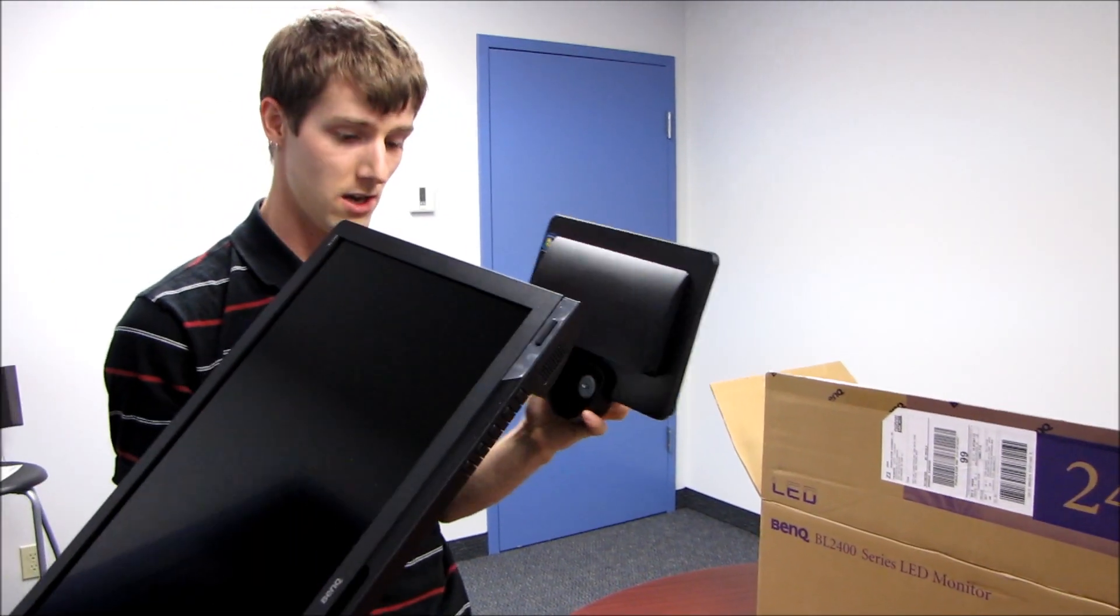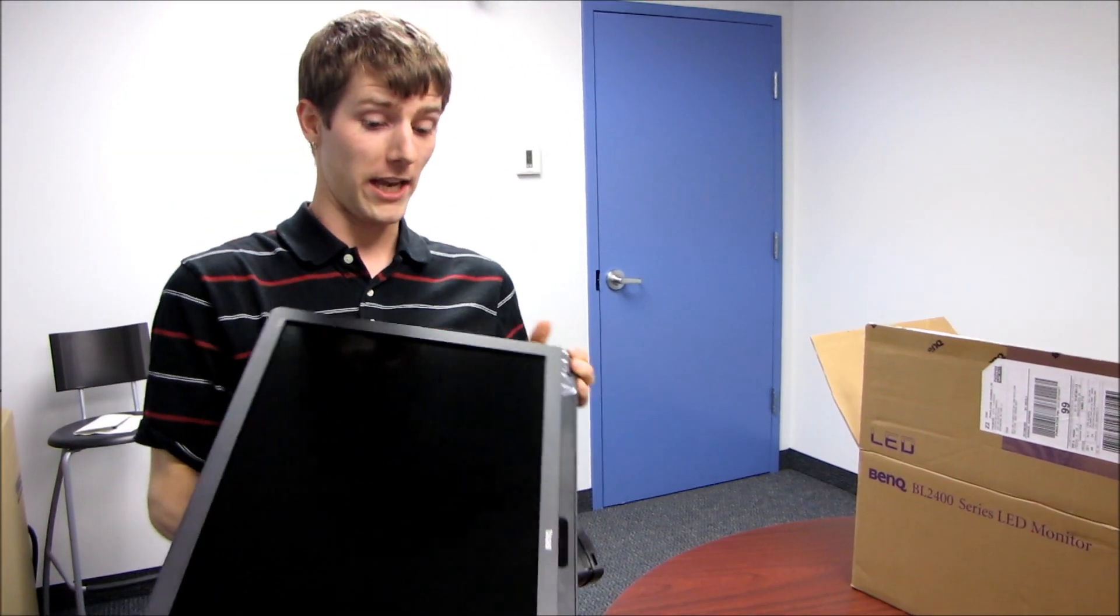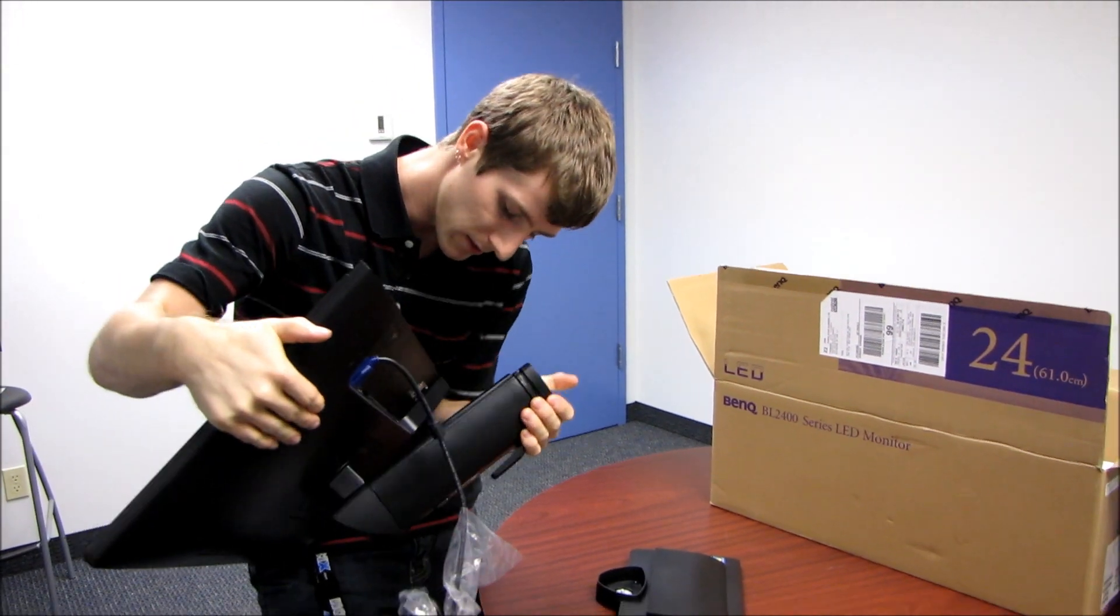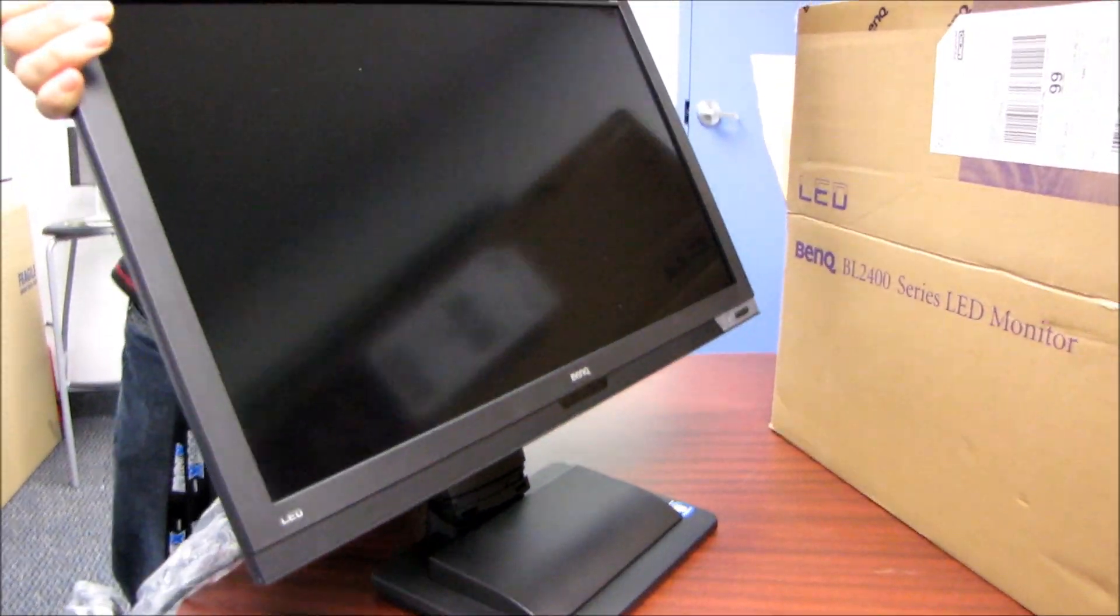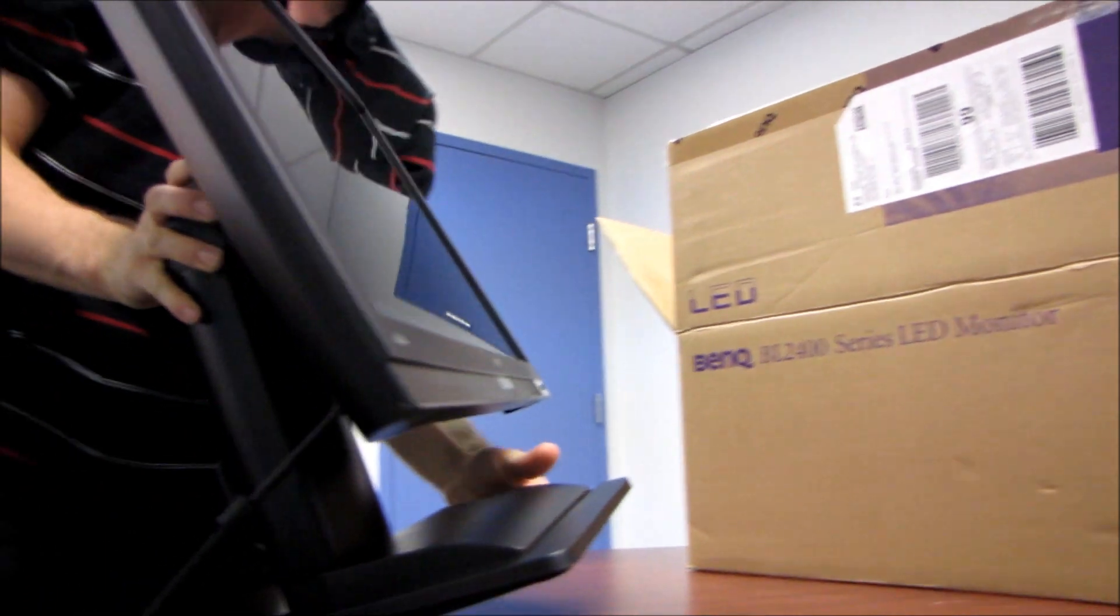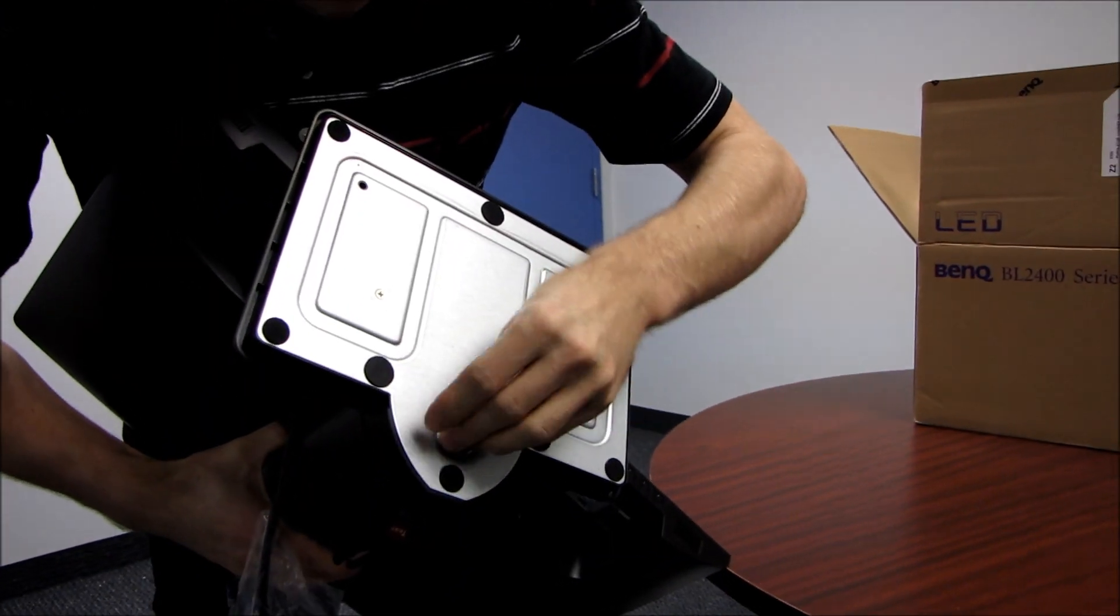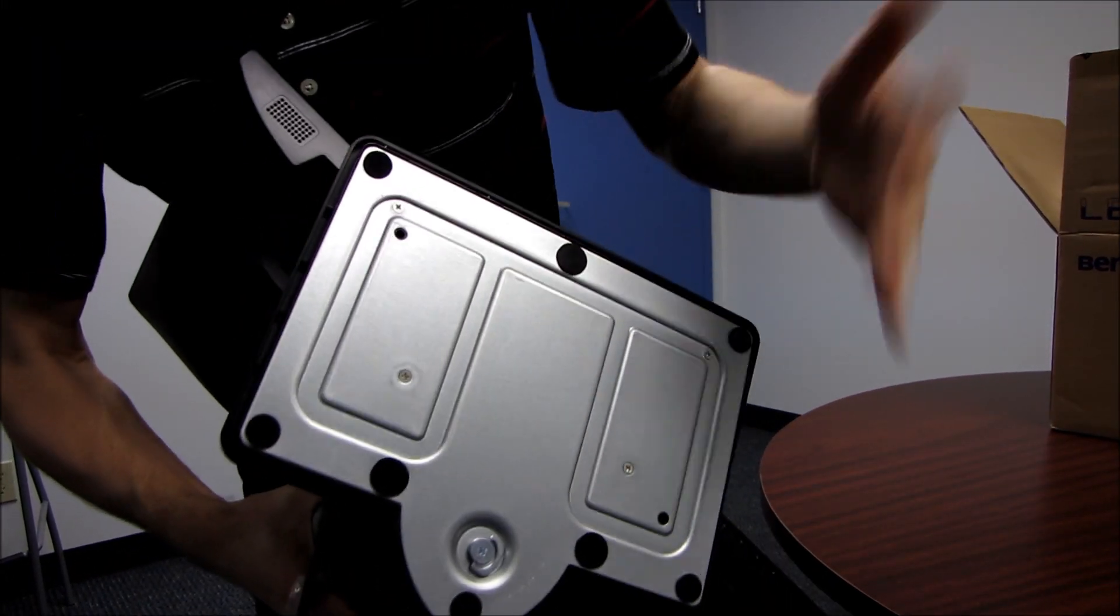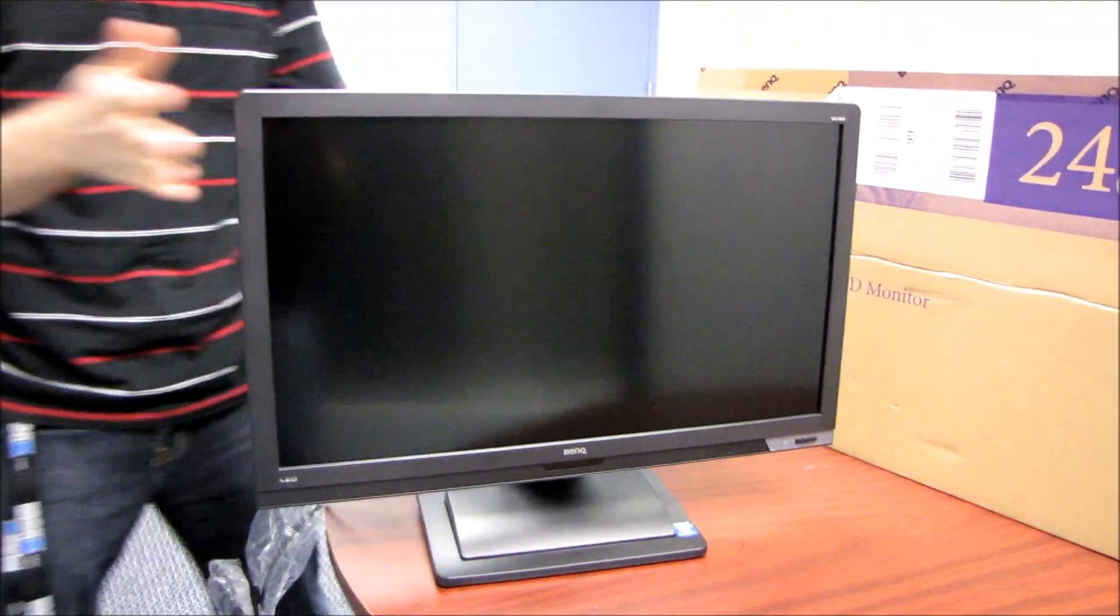So I'm going to go ahead and attach the base, just for the sake of showing you how simple it is. We're just going to take the base, position it in there, just like that, and then we're going to tip it up. So that's pretty straightforward, and then we're just going to screw it in. You can use a screwdriver, but you can probably get it tight enough by hand anyway, so I wouldn't worry too much about it. And there we go, that was the whole assembly process for this monitor.